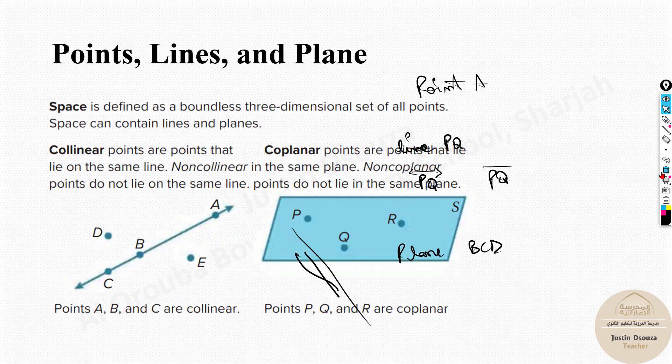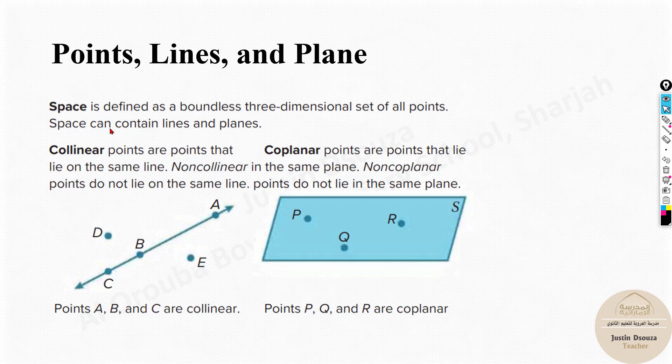Now here we have space. Space is basically boundless three-dimensional set of all points. Now space is something that contains lines, planes and everything. You can have different planes all together, like non-coplanar and stuff.